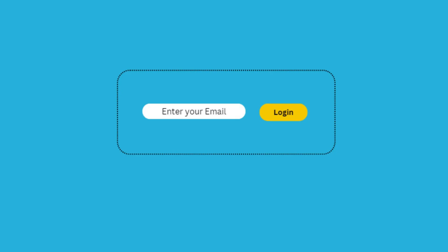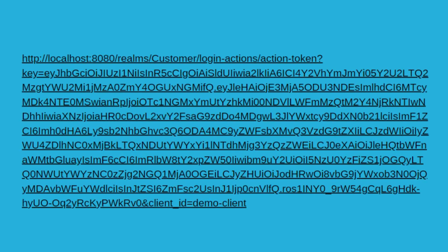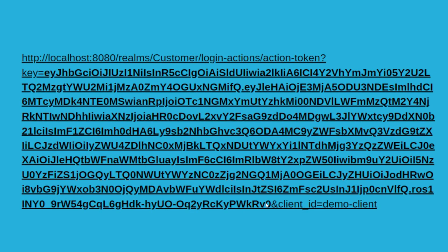Let's suppose this is a user screen and we have an email text box and a login button. Once we click the login button, the call will go to Keycloak and it will generate a link and send it to your email. Once you open the email and click on the link, it will automatically log you into your website. This is called a magic link — it generates a unique action token and the client ID is demo client. Once the user clicks on this link, they are automatically logged in.